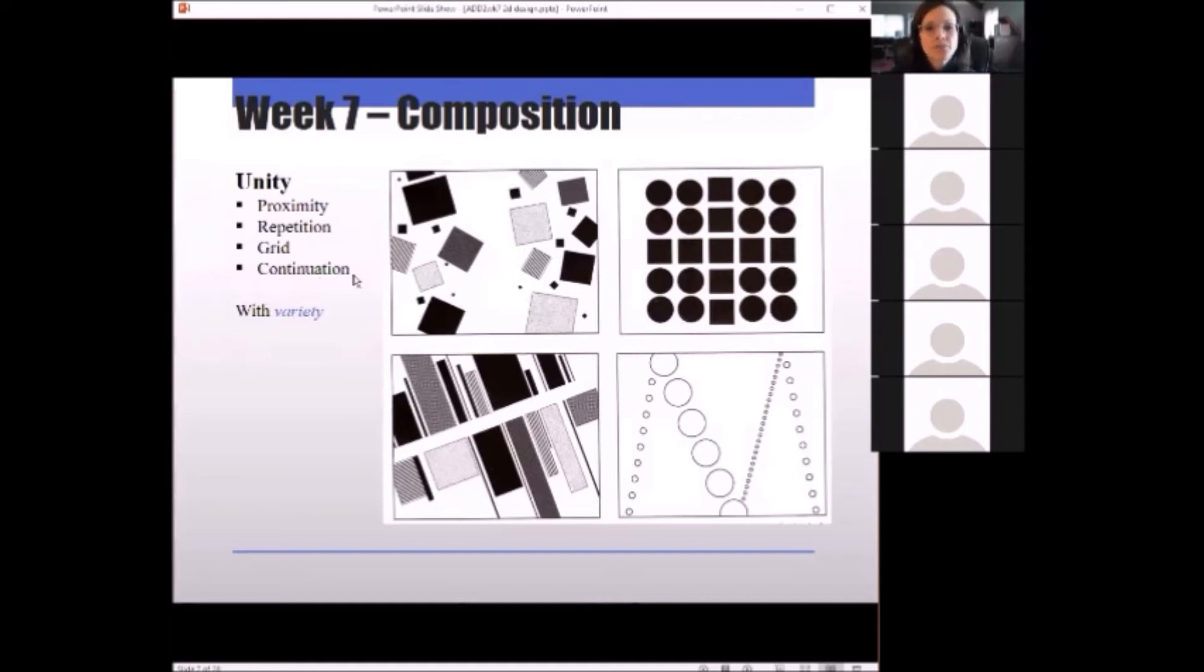Now continuation. This is a little bit harder to grasp, but think of continuation as being an invisible line. Where in these compositions do you see continuation? Where do you see an invisible line flowing through the composition? Eli and Nathan say bottom left. Okay, you're right. There's more than one answer though. Audrey sees it in the bottom right for sure. Those circles are creating a line. James sees it in the bottom right.